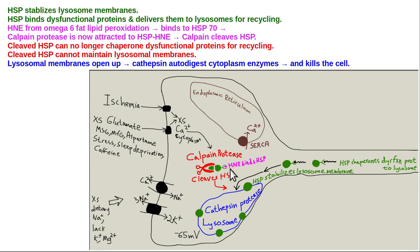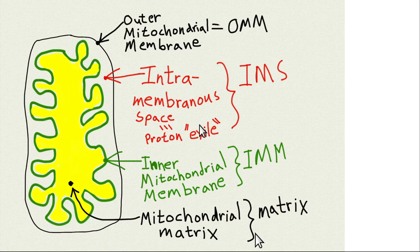When HNE is present, it binds to the HSP, and that HNE-HSP combination activates a proteolytic enzyme in the cytoplasm called calpain. Calpain cleaves the HSP, rendering it dysfunctional. The HSP can no longer chaperone dysfunctional proteins, and can no longer stabilize the lysosome membrane, so the lysosome breaks apart and its digestive enzymes kill the cell. This is how omega-6 cooking oils can lead to brain damage, pancreas damage, and cognitive decline.